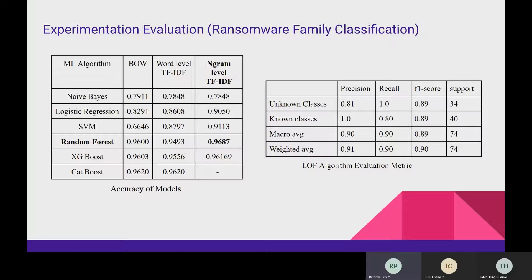As you can see here, random forest output the best result among other algorithms. The next table shows the performance of LOF, in other words, Local Outlier Factor, novelty detection model performance evaluation.